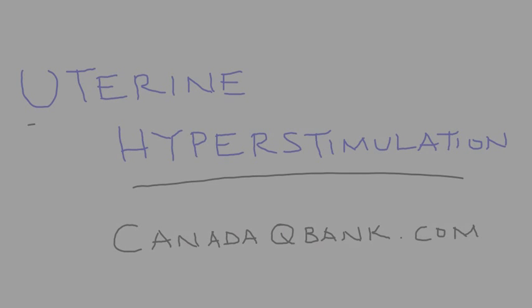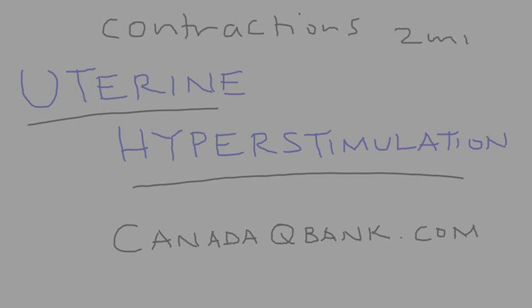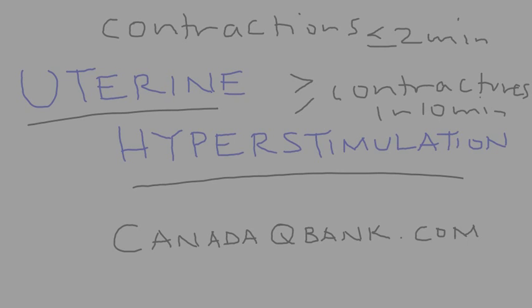Uterine hyperstimulation is the topic for this video. Uterine hyperstimulation is defined as contractions that are 2 minutes in length or less. For example, if you have 5 or greater contractions in a period of 10 minutes, that would be considered uterine hyperstimulation.